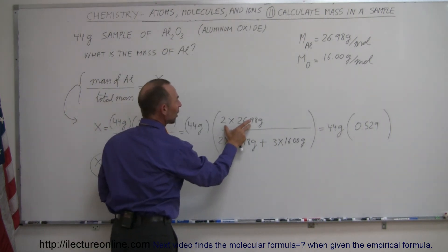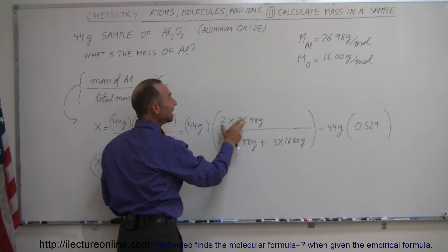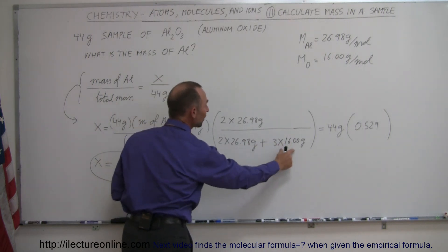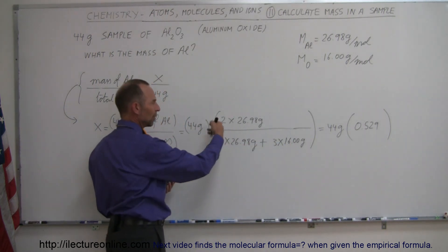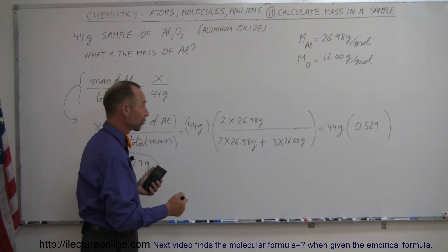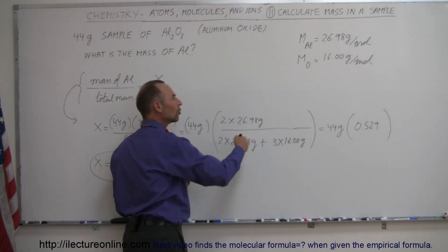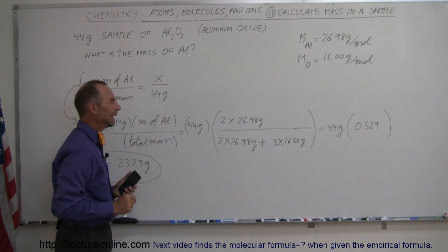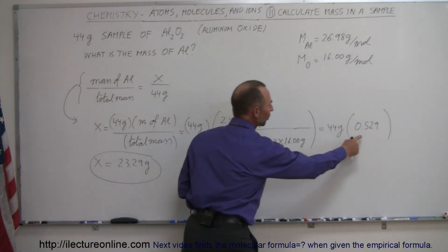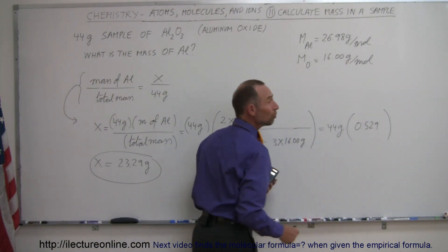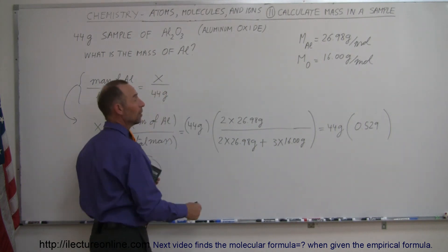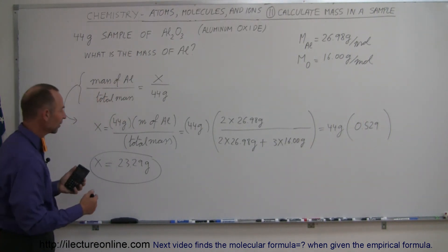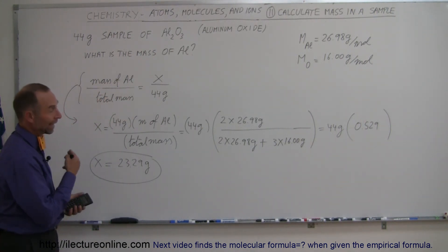This is representative of the amount of mass we have in aluminum in the sample, and this is representative of how much total mass we have. All we care about is the ratio, and this is how we find the ratio of the mass of aluminum to the total mass in the sample. That ratio is 0.529, which means 52.9% of the total mass is aluminum. Multiply 52.9% times 44 grams and you get 23.29 grams, which is the amount of aluminum in your sample.